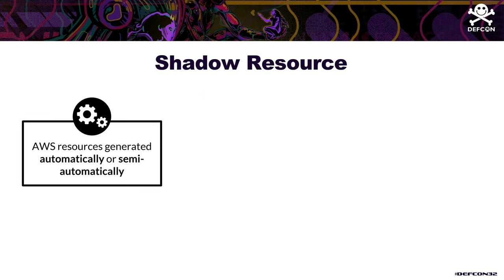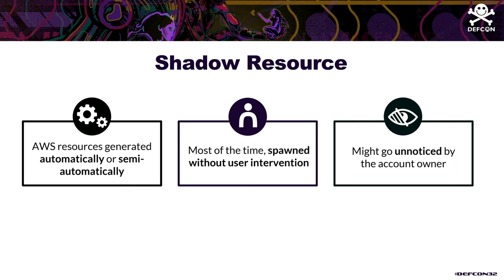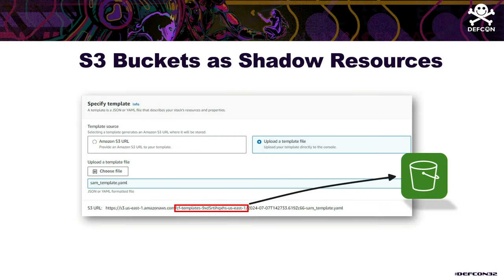We decided to name this kind of resource that spawns automatically without user intervention a "shadow resource." When we refer to shadow resources, we mainly mean resources generated automatically or semi-automatically by AWS. Most of the time they spawn without user intervention and may go unnoticed by the account owner — the S3 bucket created by CloudFormation is a great example.